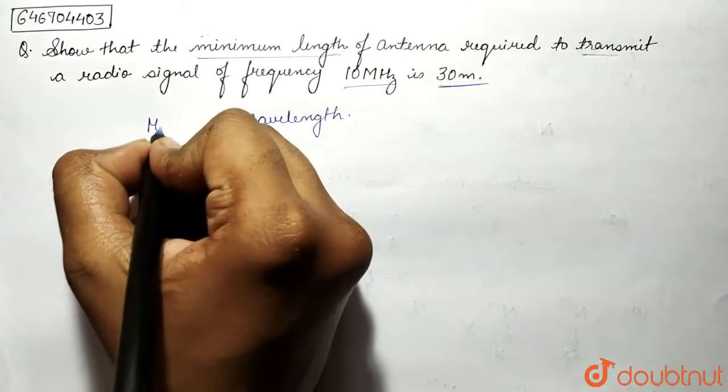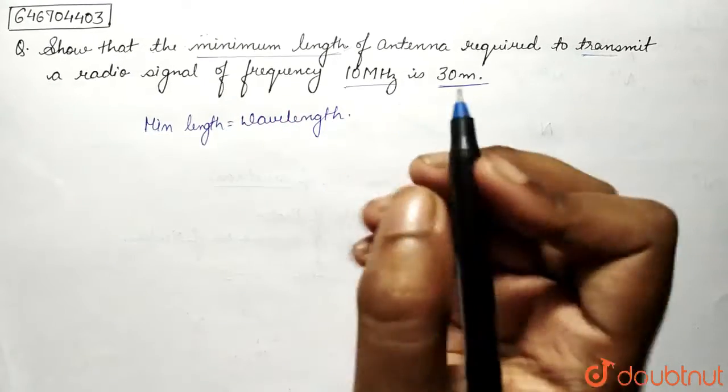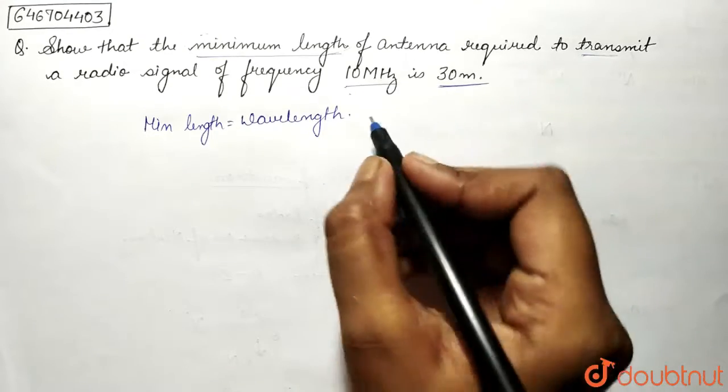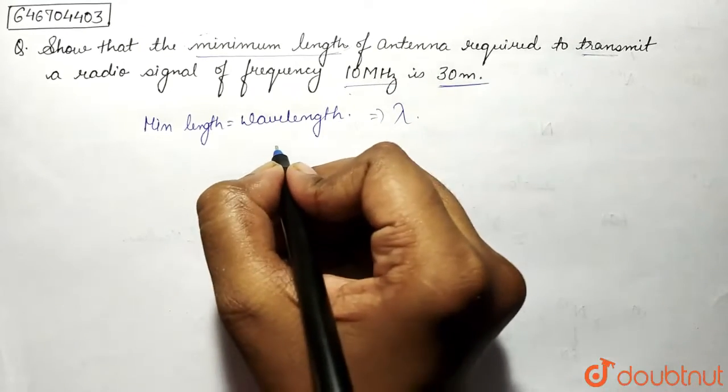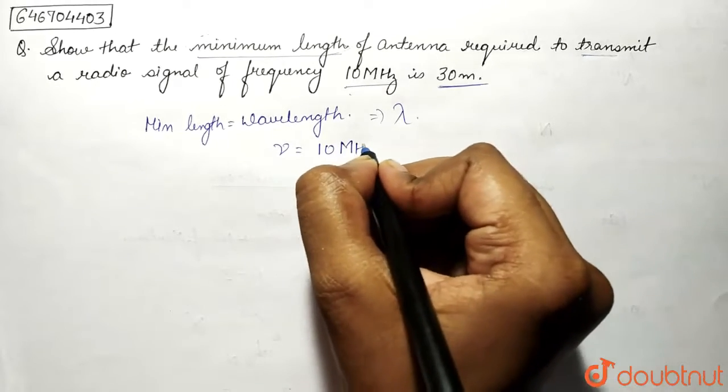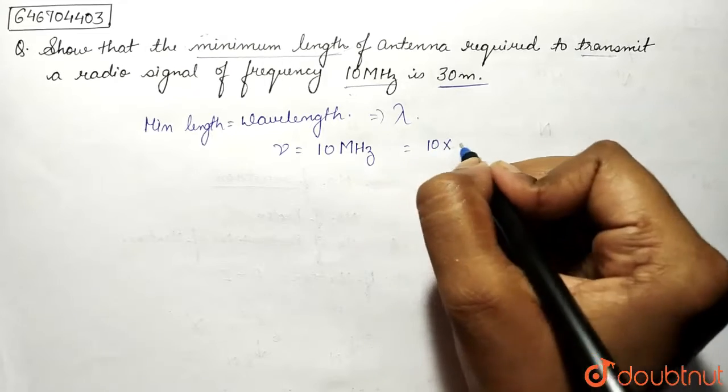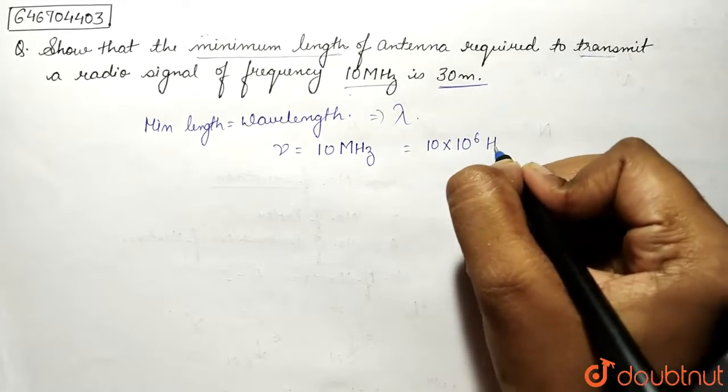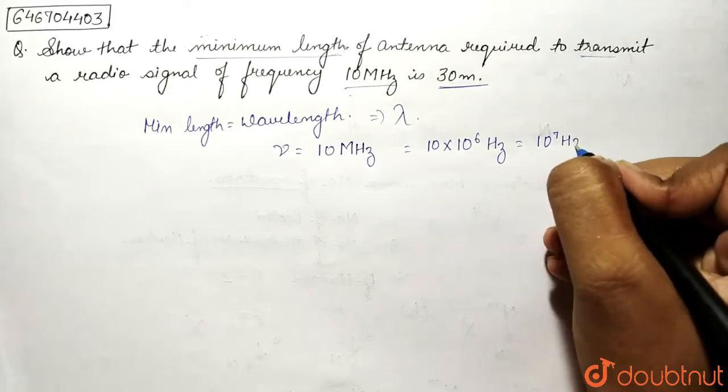So this is the minimum length. Basically we need to find lambda in this question and frequency, that is nu, is given to be 10 megahertz. So mega means 10 power 6, so 10 into 10 power 6 hertz, that means it equals 10 power 7 hertz.